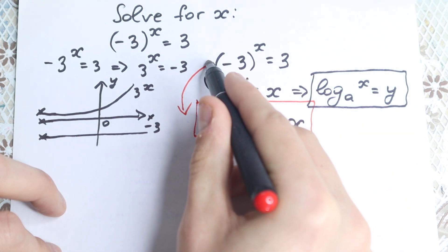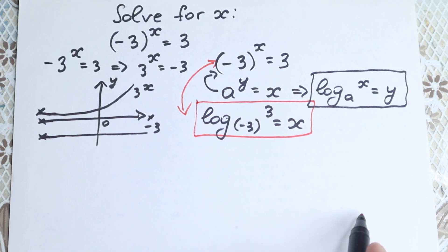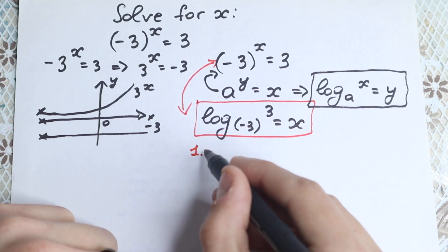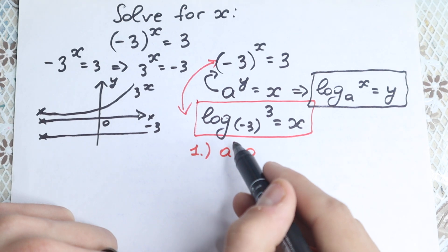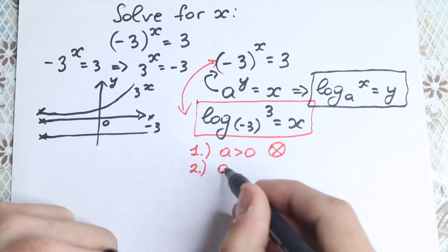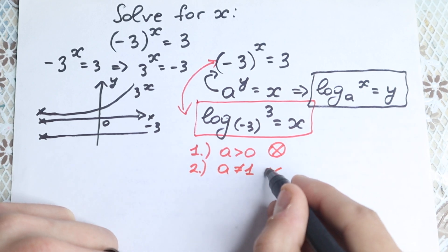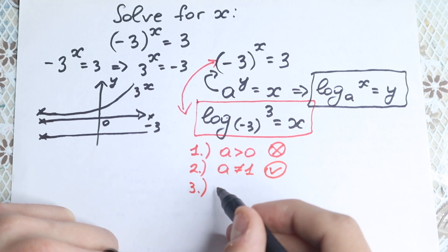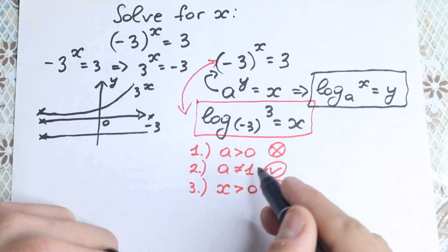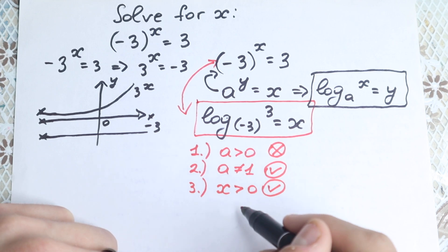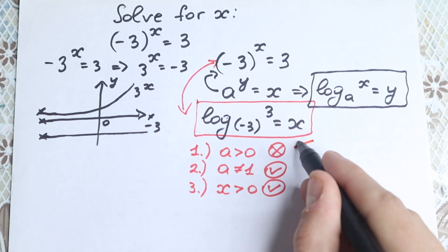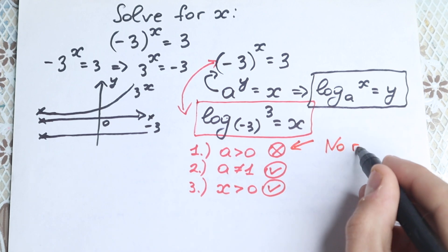But why write it as a log? Because if you know about logarithms, there are three main conditions. First, the base must be positive. Second, the base must not equal 1 — here minus 3 is not equal to 1, which is fine. Third, x (the argument) must be positive — here x equals 3, which is positive, also fine. But all three conditions must hold together. The first condition fails because our base is minus 3, which is negative. So our log has no real roots.